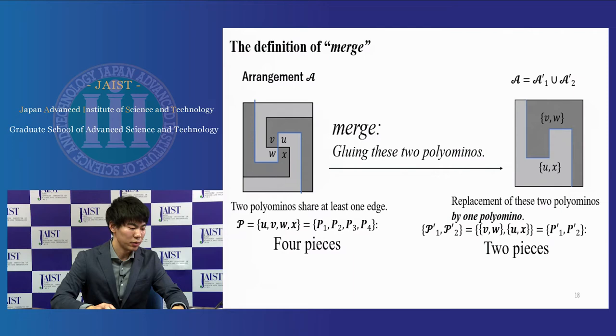This is the definition of merge. When two polyominoes share at least one edge in the arrangement A, a merge of two polyominoes is a replacement of these two polyominoes by one polyomino, which is obtained by gluing these two polyominoes. Let A be an arrangement of a set P of polyominoes. Let A' be a partial arrangement induced by any subset P' of P.